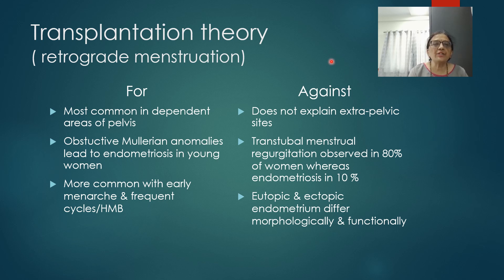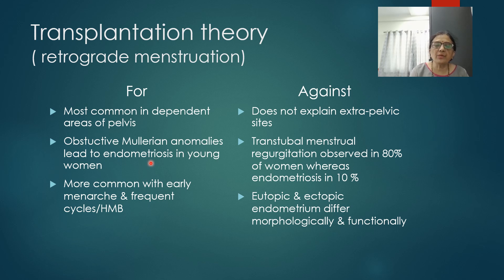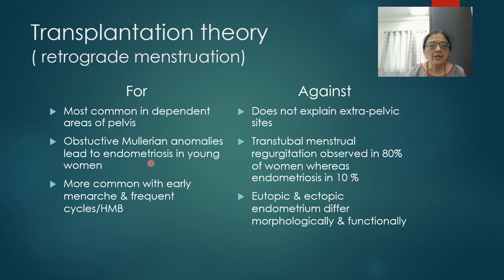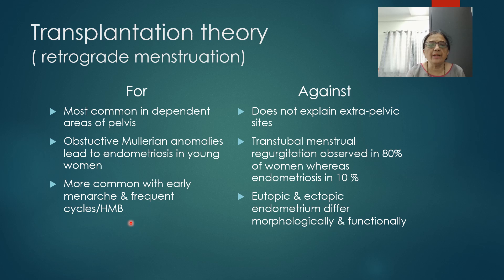This is called the transplantation theory or theory of retrograde menstruation. Points which favor this theory: endometriosis is most common in dependent areas of the pelvis; whenever there are obstructive Müllerian anomalies it is associated with endometriosis in young women due to more retrograde menstruation; and it is more common with early menarche, frequent cycles, or heavy menstrual bleeding — these points favor the transplantation theory.